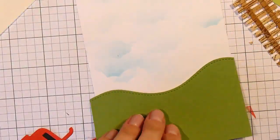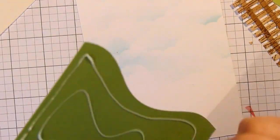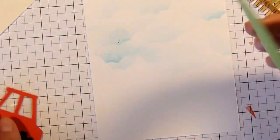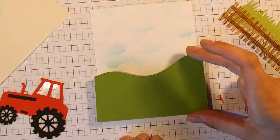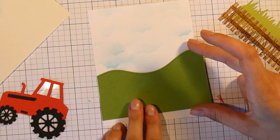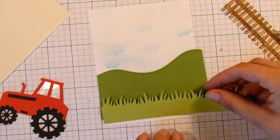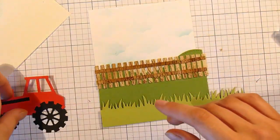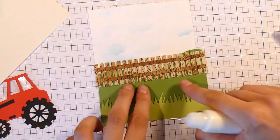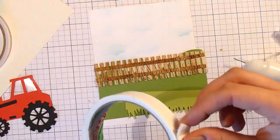And now I'm going to start putting my card together. Using some wet glue to adhere on the hill, the grassy hill. And then I'm going to put down the light green grass.